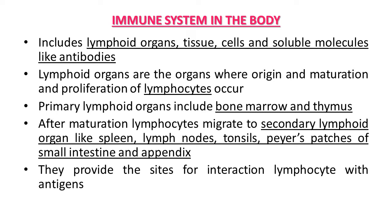The secondary lymphoid organs are the skin, lymph nodes, tonsils, Peyer's patches of the small intestine, and appendix. Bone marrow and thymus are primary lymphoid organs and the rest are considered secondary lymphoid organs. The secondary lymphoid organs provide the site for interaction of lymphocytes with antigens.